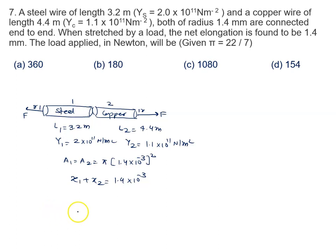x1 plus x2 is given by 1.4 millimeter. We know Young's modulus Y is given by force upon area times change in length upon original length. It means x can be written as FL upon Y into A.